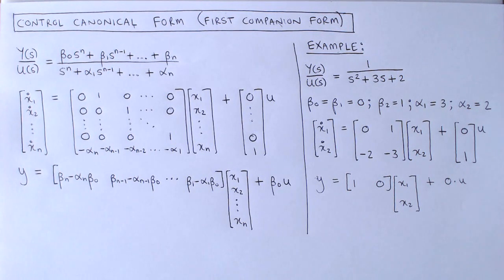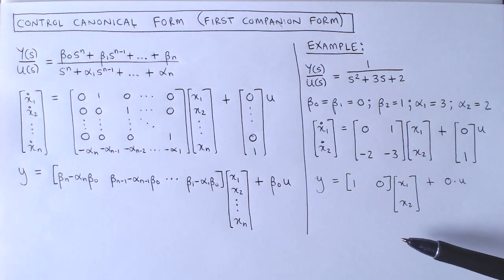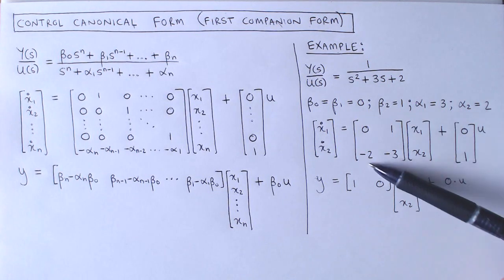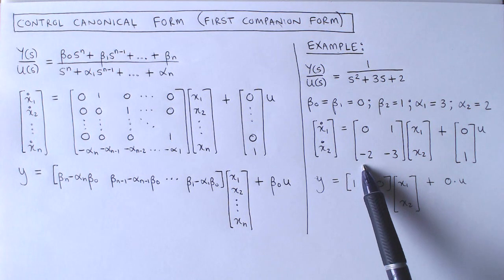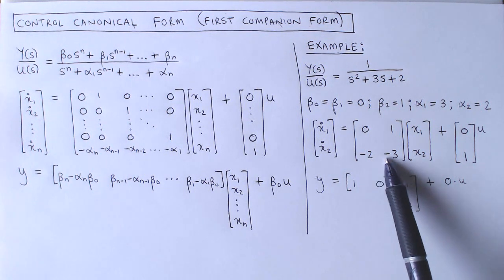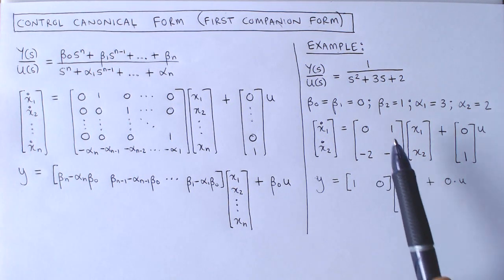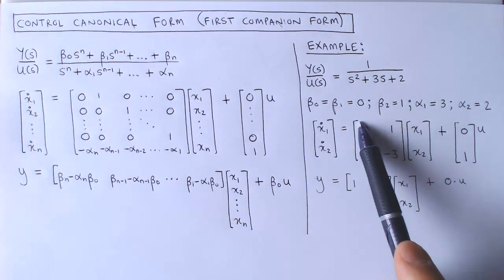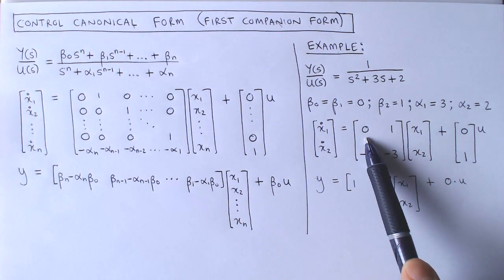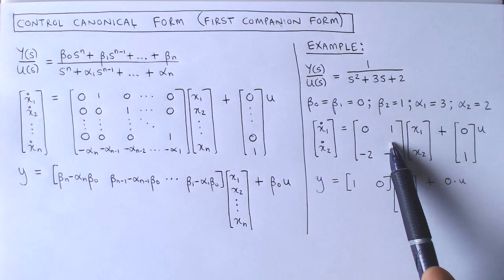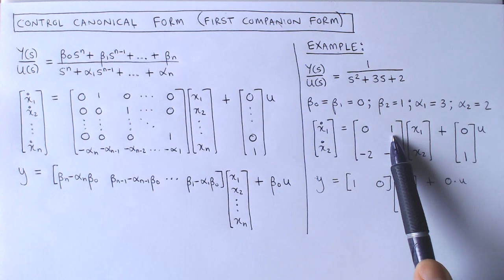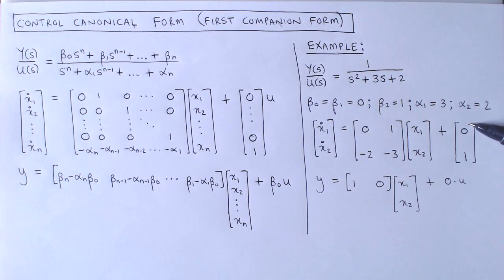The state variable system in control canonical form is then given by this A matrix where the bottom row contains minus alpha 2 and minus alpha 1. The rest of the left column contains 0 and the top right block is given by an identity matrix, which in this case is equal to 1. The vector B contains 0 except for the last element which is 1.